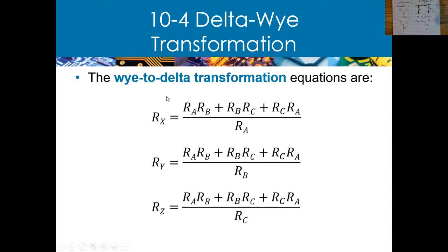To go from Y to delta, the numerator is the same — R_ab plus R_bc plus R_ca — over a denominator depending on which resistor we want to convert to. We will be doing a lot of those examples, so this is just an introduction. When we get there in our lesson, you'll see what we're talking about.